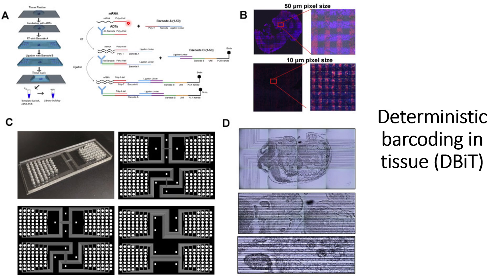This is the antibody-derived barcode — the antibody-derived DNA tag — which also contains poly-A tails. First, these are attached with barcode A1 to 50. In this step, barcode A1 will bind to the mRNA present within the tissue cells, and barcode A1 will also bind to the antibody-derived tags. After that, reverse transcription occurs.